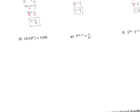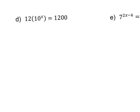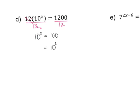Moving on to the next problem. This one gets a little bit tricky because there's a 12 outside of the parentheses. To get to x, you have to get rid of outer layers first. The 12 is multiplying the parentheses, so to undo it I divide it off the other side. Then 10 to the x drops down, and 100 divided by 12... actually 100 is really 10 squared. Now the bases are the same, they cancel, x comes down and 2 comes down — so x is equal to positive 2.